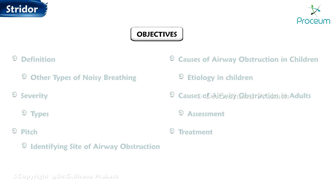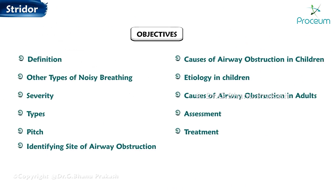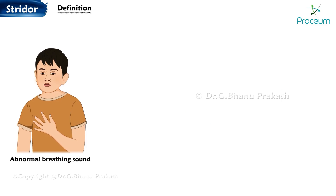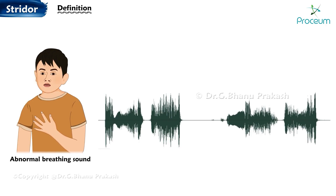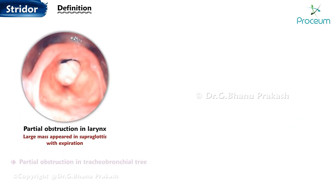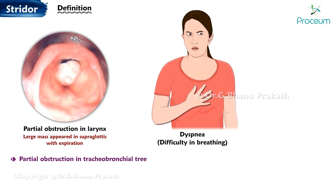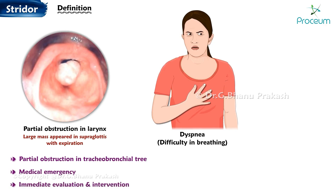Strider: Definition. Strider is an abnormal breathing sound characterized by its harsh, high-pitched, and turbulent nature. It typically occurs when there is a partial obstruction in the larynx or the tracheobronchial tree. Strider is often accompanied by dyspnea, which is difficulty in breathing. Strider is considered a medical emergency, and immediate evaluation and intervention are necessary to identify and address its underlying cause.